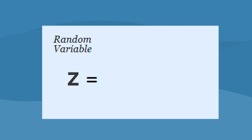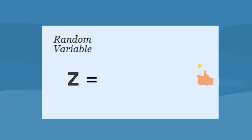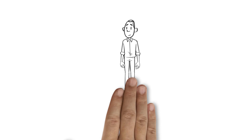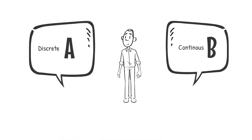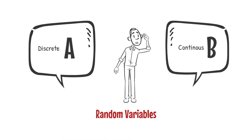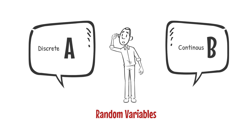Let's define a random variable Z that can be used to quantify the outcomes of a random event such as a coin flip. Z takes a value of 1 if heads and 0 if tails. There are two types of random variables: discrete random variables that can take certain distinct values, and continuous random variables that can take any value within an interval.